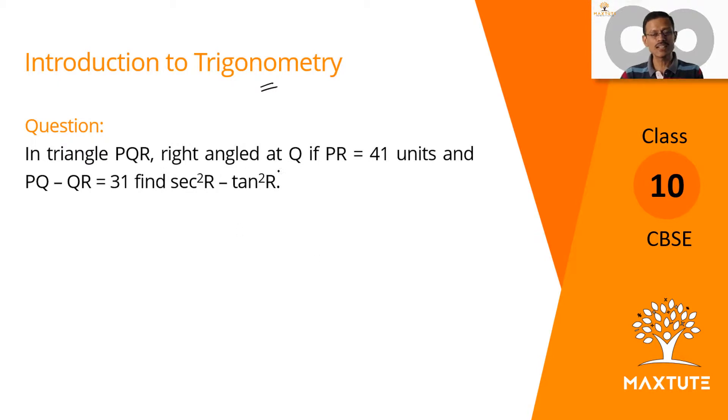In triangle PQR, right-angled at Q, measure of side PR equals 41 units. We've been given information about the other two sides. The difference between PQ and QR equals 31. We need to compute the value of this expression.